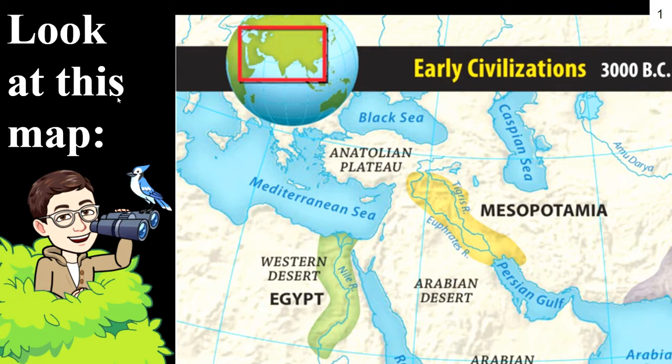Furthermore, I want you to look at this map. This map reveals where the rivers are located in Mesopotamia and Egypt. As you can see, Mesopotamia has the Tigris and Euphrates, and Egypt has the Nile River. The difference between the two — or three rivers, my apologies — is that the Tigris and Euphrates were very unpredictable rivers, unlike the Nile. The Nile was very predictable, and because of that, they were able to irrigate crops a lot easier.